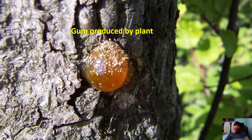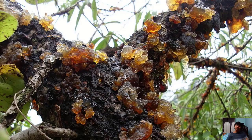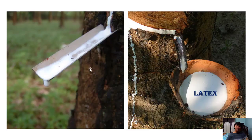Another secondary metabolite is gum. When plants get any injuries, they generally produce gum to heal those wounds. This gum is also useful for us — in making medicines, in the food industry, and in the binding industry. Neem, acacia, and many other plants produce gum to treat their wounds, but we use it for other purposes.